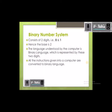Next is the binary number system. The prefix 'bi' means 2, so binary number system means it consists of only 2 digits — 0 and 1. Only these 2 digits are present, which is why the base is 2. For decimal there are 10 digits and the base is 10; for binary there are 2 digits and the base is 2.